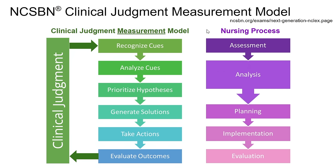If you look on the right side, it kind of follows the nursing process in a way, but the nursing process is focused on what we do as nurses when taking care of patients. The clinical judgment measurement model is testing how well you can move through these steps in making decisions at the bedside. Recognizing cues means can you notice the things you need to notice. Analyzing cues means can you pick out what's important. Prioritizing hypotheses is deciding what's most important. Generating solutions is what can I do. Taking action is how do I do it. And evaluating outcomes is did it work — then we continue in a continuous cycle, just like the nursing process.